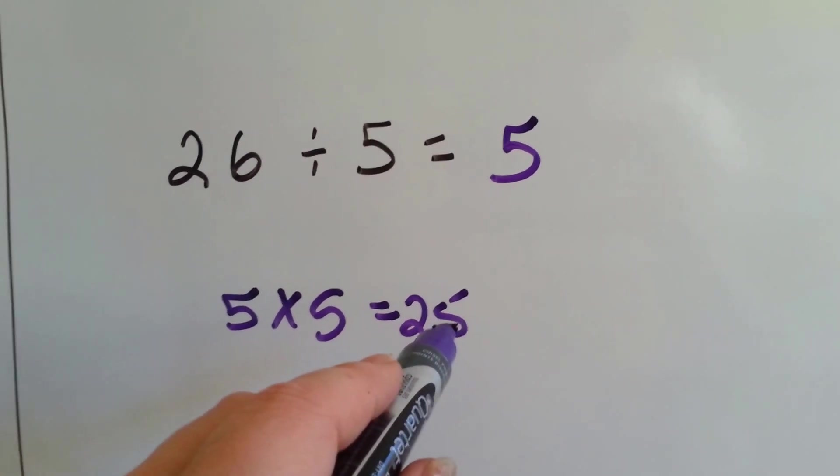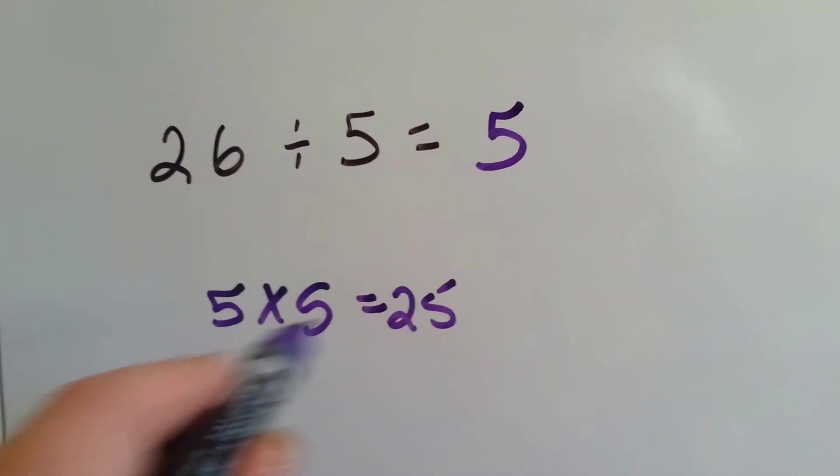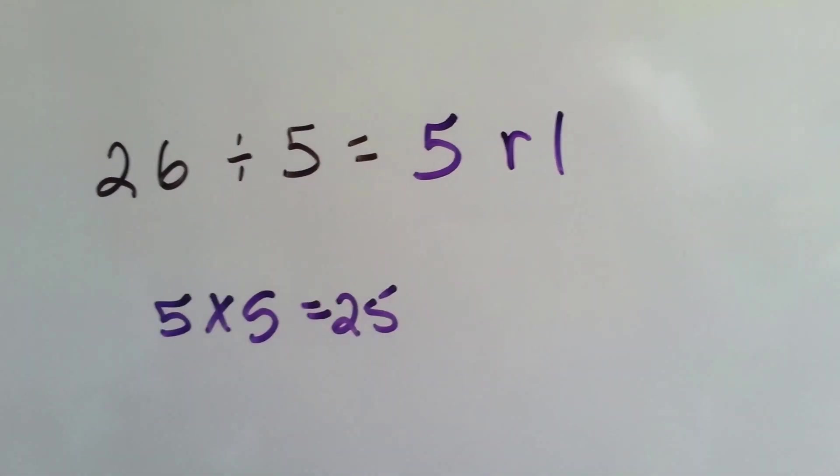So we know that 5 can fit in there. But how many is between 25 and 26? Just 1. And we can't fit another 5 in there. So we have 5 remainder 1.